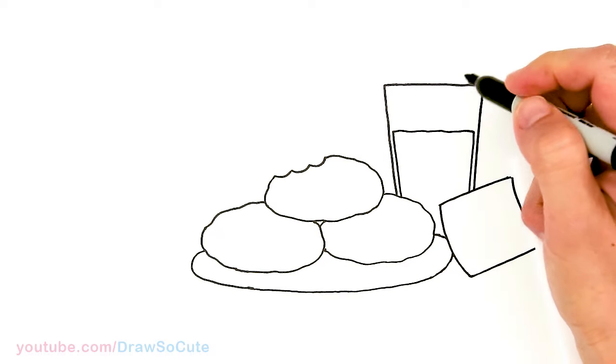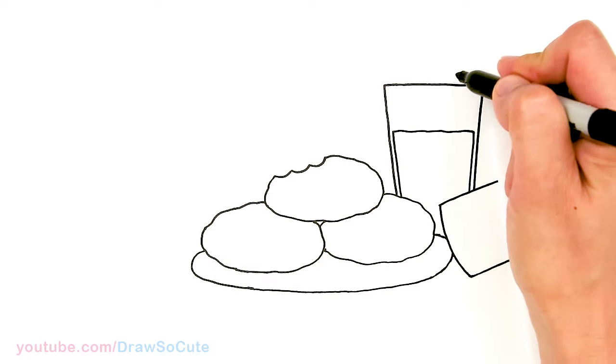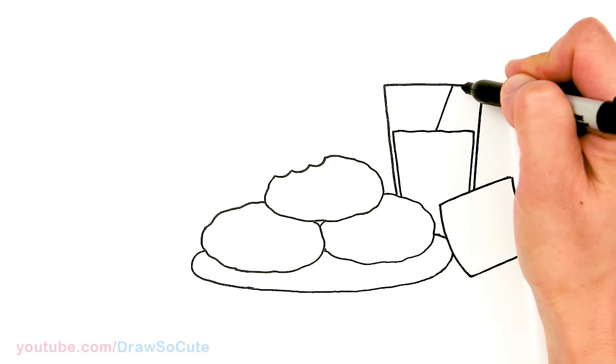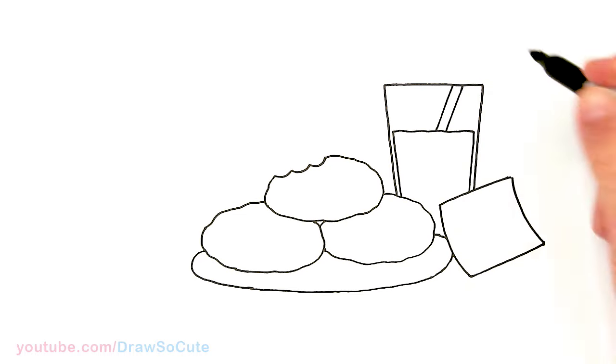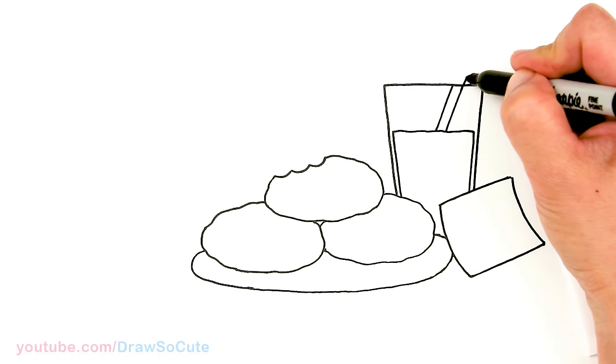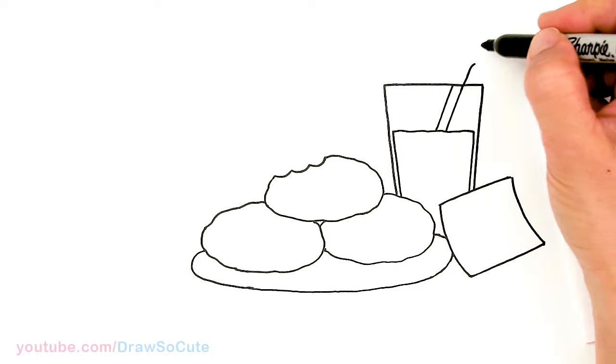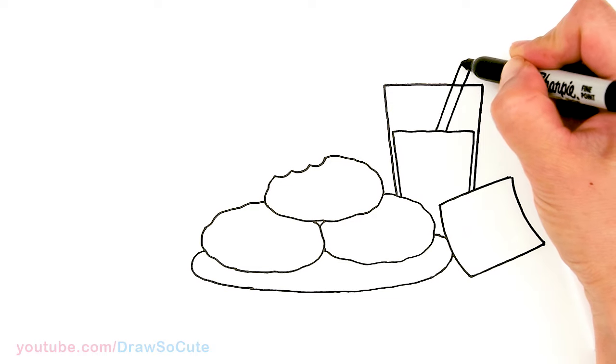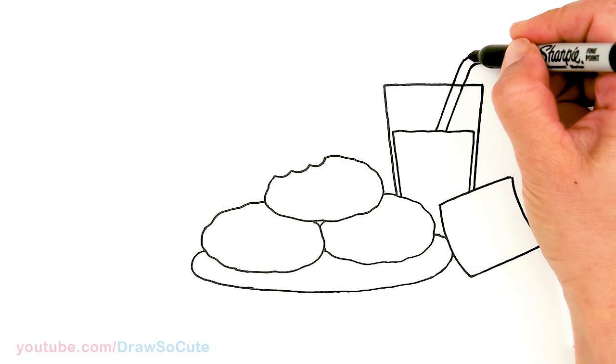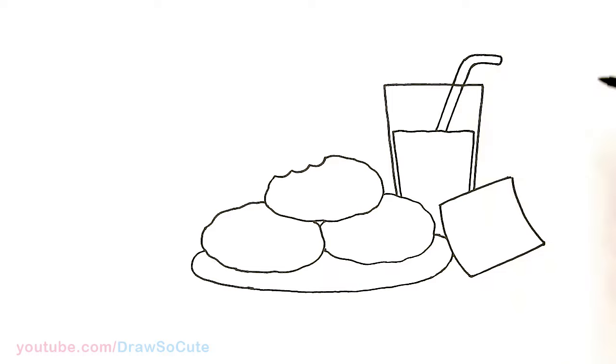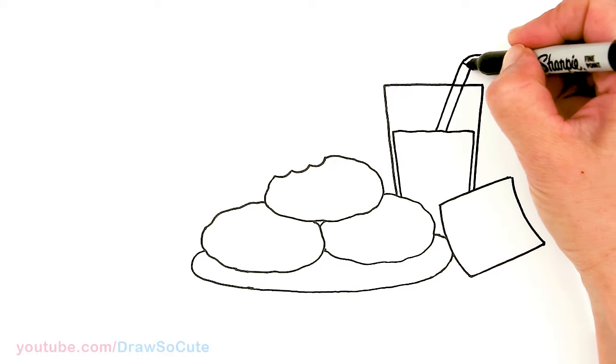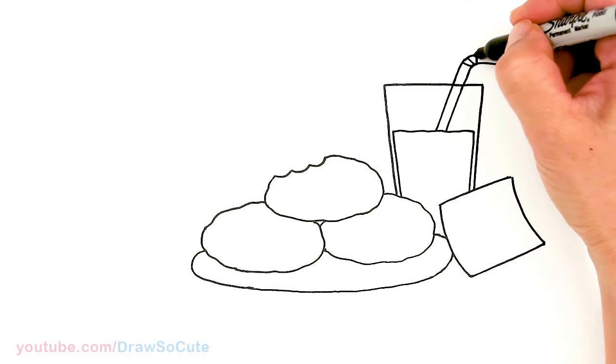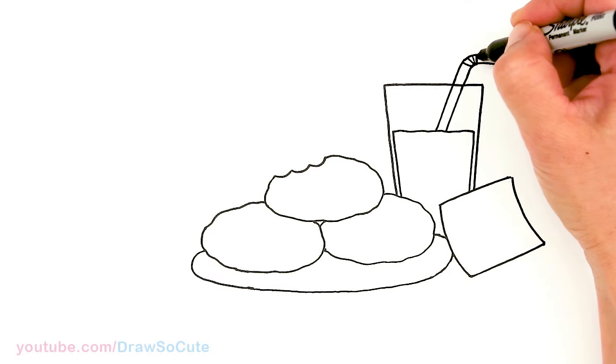And then let's draw our straw. So I'm gonna come right here and draw an angle line. So two of them. And let's bring our straw up and give it a curve and thicken our straw. And then in the center right here where it curves, add some angle lines to make it look like the bending part right there.